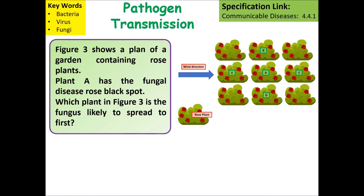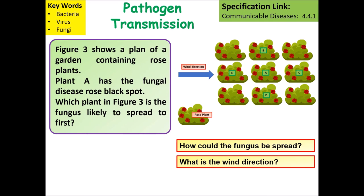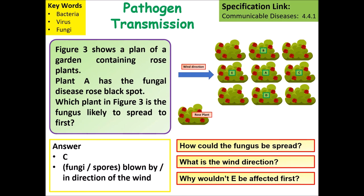The final question concerns pathogen transmission in plants. A diagram shows a rose garden where Plant A has the fungal disease black spot. Consider how the fungus spreads and the direction of the wind to determine which plant is most likely to be infected next. The answer is Plant C, because the fungal spores are blown in that direction by the wind.